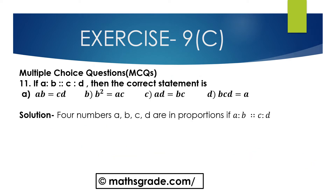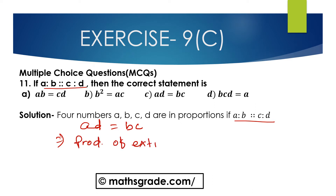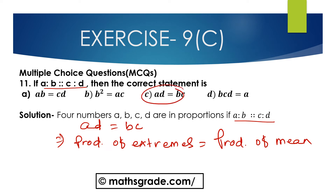Now we will solve question number 11, a multiple choice question. If A is to B is proportional to C is to D, then the correct statement is: options are AB equal to CD, B squared equal to AC, AD equal to BC, or BCD equal to A. Since four numbers A, B, C, D are in proportion, we apply the rule: product of extremes is equal to product of means, which gives AD equal to BC. So option C is correct.